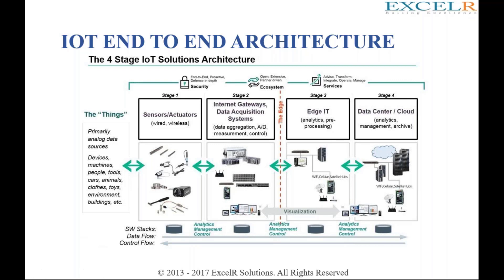This is the architecture used in most IoT applications. Stage one is sensors — our IoT sensor system where we sense information from the environment. After that we have to process this information, for which we use internet gateways or data acquisition systems. Data acquisition systems aggregate data and take care of conversions, measurements, and control. Most data coming from sensors is in analog form and needs to be converted into digital form before aggregation.